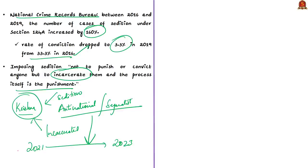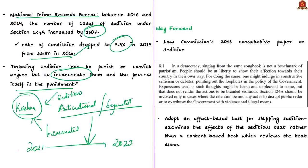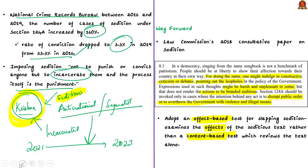The Law Commission's 2018 paper on sedition is also significant. It stated that people should be at liberty to show their affection towards their country in their own way — through constructive criticism, debates, or pointing out loopholes in government policy. Such expressions might be harsh or unpleasant but that does not render them seditious. Section 124A should be invoked only where the intention is to disrupt public order or overthrow the government through violence and illegal means. The author proposes an effect-based test for sedition — the effects of the seditious text should be considered rather than merely its content. That is why the column is titled 'Sedition lies in the effect, not in the content.'